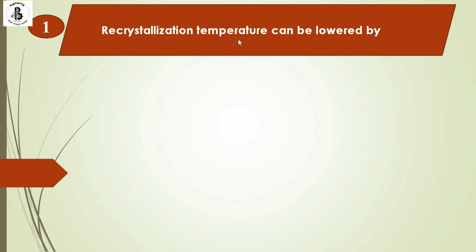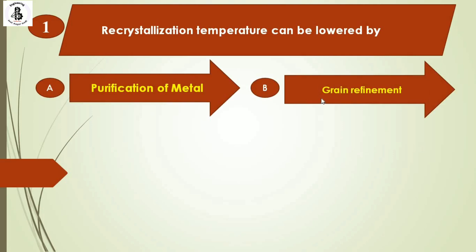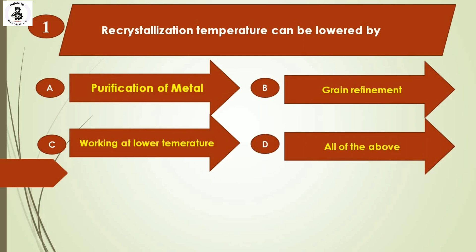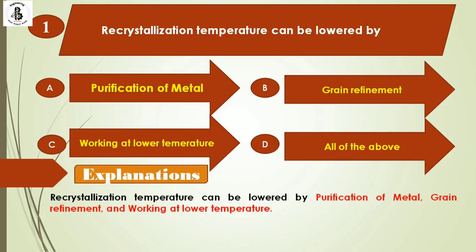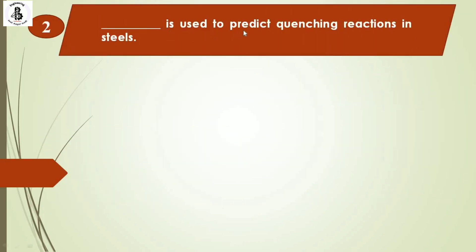Question 1: Recrystallization temperature can be lowered by — Option A: purification of metal, Option B: grain refinement, Option C: working at lower temperature, Option D: all of the above. The recrystallization temperature can be lowered by purification of metal, grain refinement, and working at lower temperature. So the right answer is Option D, all of the above.